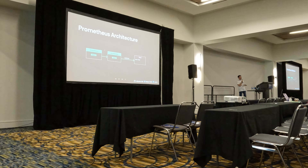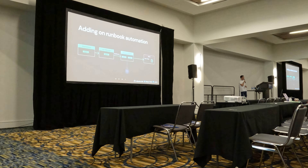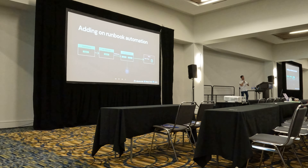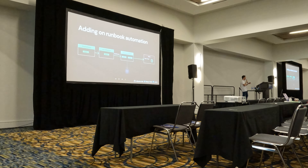We're going to change that architecture a little bit — we're going to add in an additional component. One way to implement runbook automation, which is very popular, is to add an extra component in the middle. Alerts come from Prometheus, they go to the Alert Manager, and from the Alert Manager they get sent to the runbook engine. The runbook engine takes that alert, pulls in extra context about what the alert is, what it means, maybe why it's happening or what we can fix. And then it sends that alert plus the extra context on to the final destination.